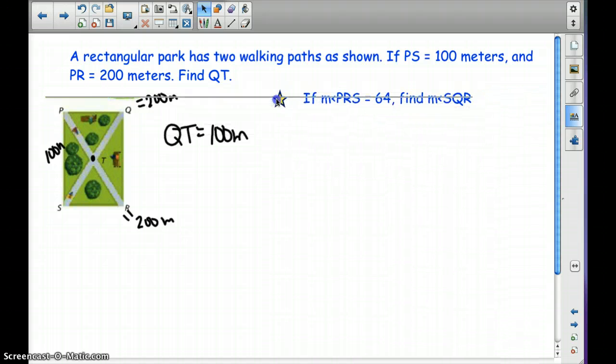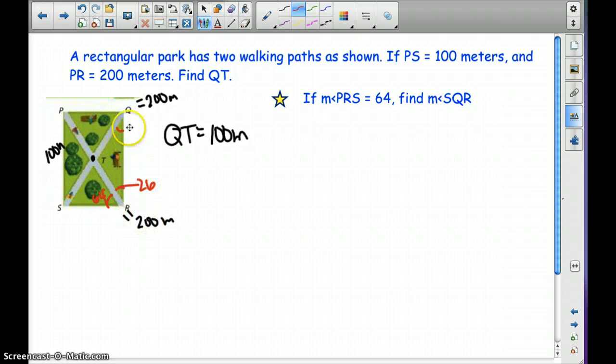Now let's look at some angles. If the measure of PRS is 64, we want to find SQR. Okay, so we know that this is 90 degrees. Angle R is going to be 90. So if this is 64, this other side of the angle is going to be 26.